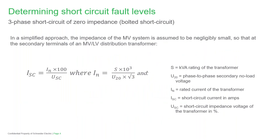Let's look first into determining short circuit fault levels, which is probably the first step every engineer takes when deciding what protection devices to use. A knowledge of three-phase symmetrical short circuit current values — referred to as ISC — at strategic points of an installation is necessary to determine switchgear braking capacity, cable thermal withstand rating, protective device trip settings, and so on. A three-phase short circuit of zero impedance, a so-called bolted short circuit, fed through a typical MV/LV distribution transformer will be examined.